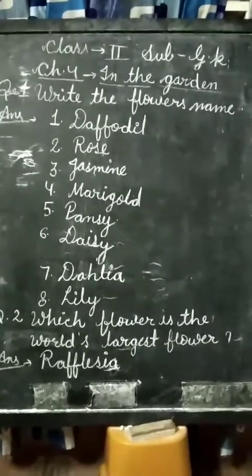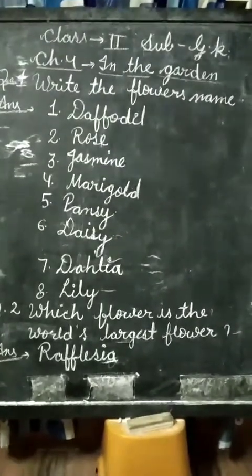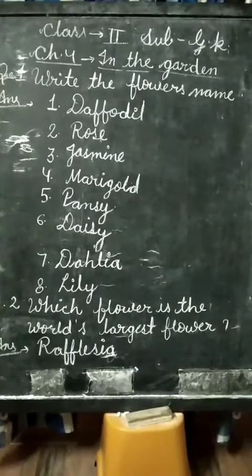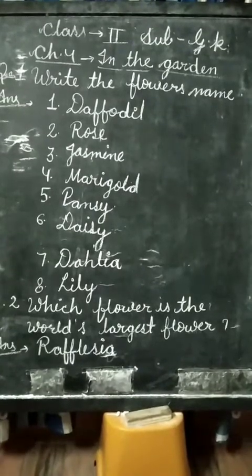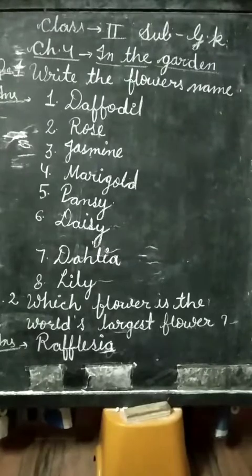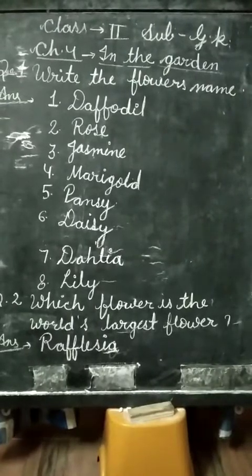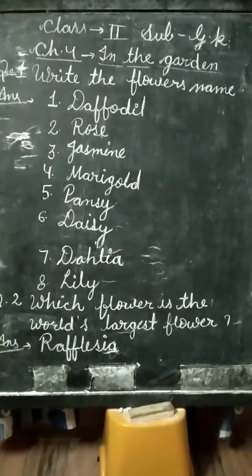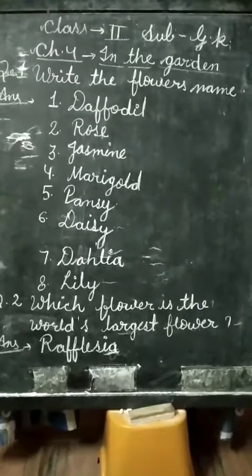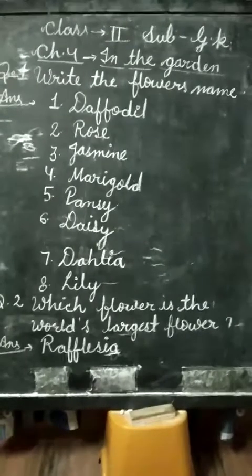You can write the chapter name first, then the date and end chapter name, after the questions. Write question number 1: Write the flowers' names. Then write question number 2 and complete it.